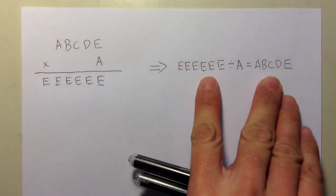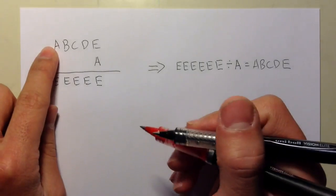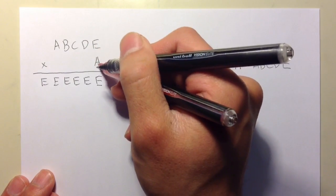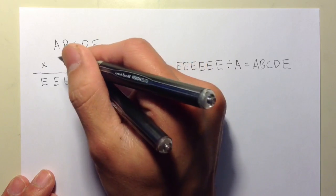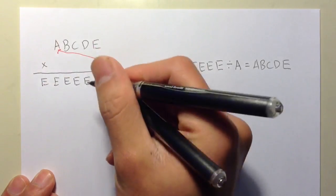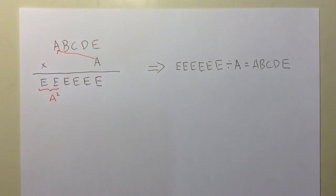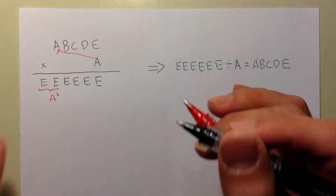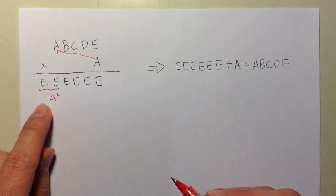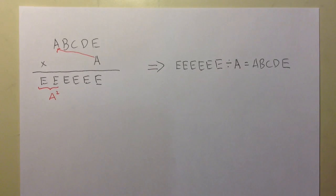One more condition is going to help us. This A is the same as that A, and when you do multiplication, you first do A times E, then A times D, A times C, A times B, and finally A times A. So at the end, when you do A times A, you put that result at the beginning of the six-digit number. This is a good hint, because now we know A squared should be close to a two-digit number with the same repeated digits — like 33, for example.